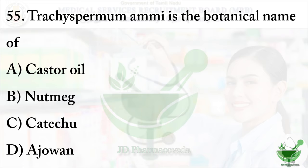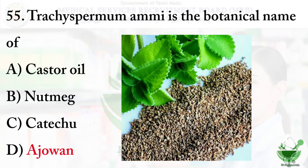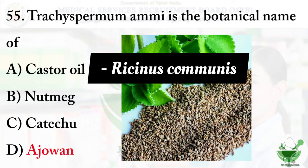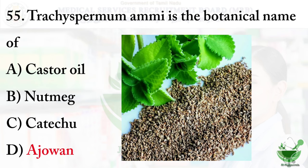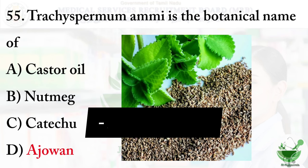Question number 55: The botanical name of which drug is — option A, Castor oil; option B, Nutmeg; option C, Catechu; and option D, Ajwan. The right option is option D, Ajwan. The other options: Catechu's botanical name is Uncaria gambier.